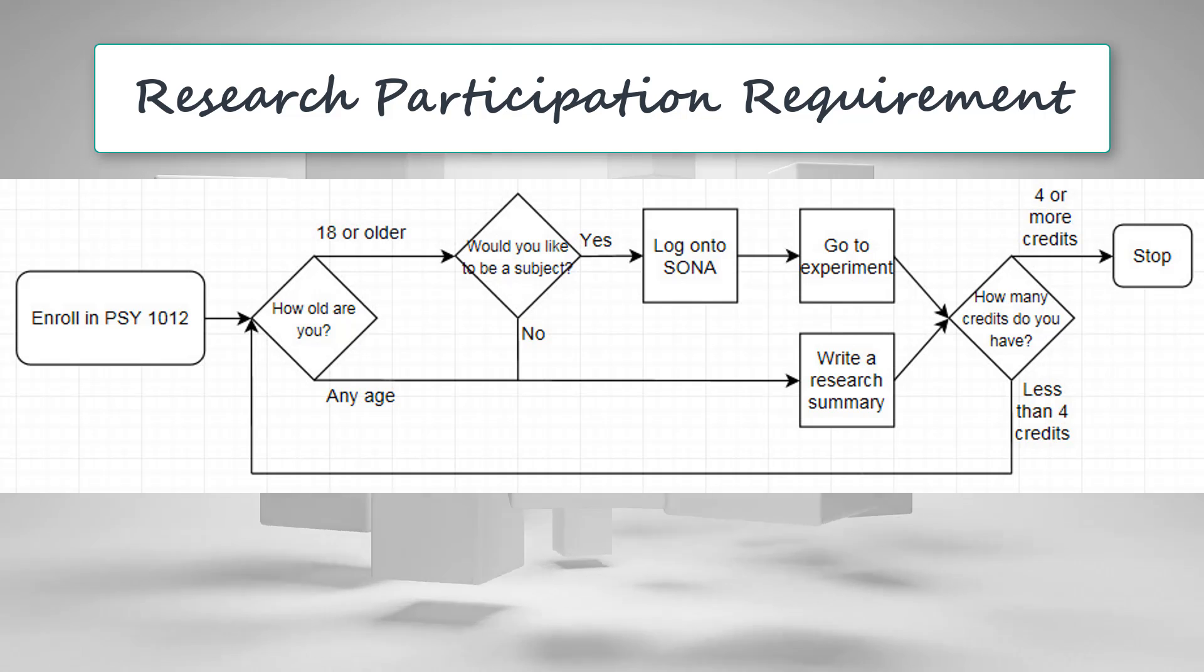Students of any age can do research summaries. However, students less than 18 years of age must do the research summaries. Research summaries are 600-800 word summaries of research articles that you will find at the FAU Library. Additional information specifying the details of how to access the research articles and how to complete them is published in the Files section on Canvas. Each research summary is worth one credit.